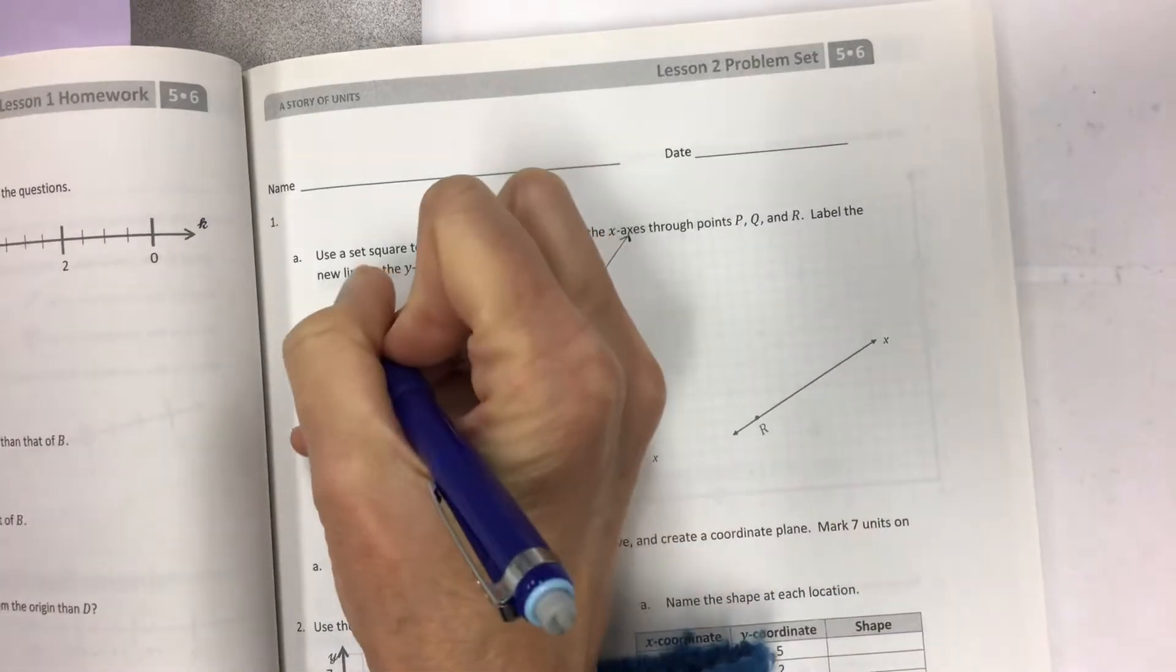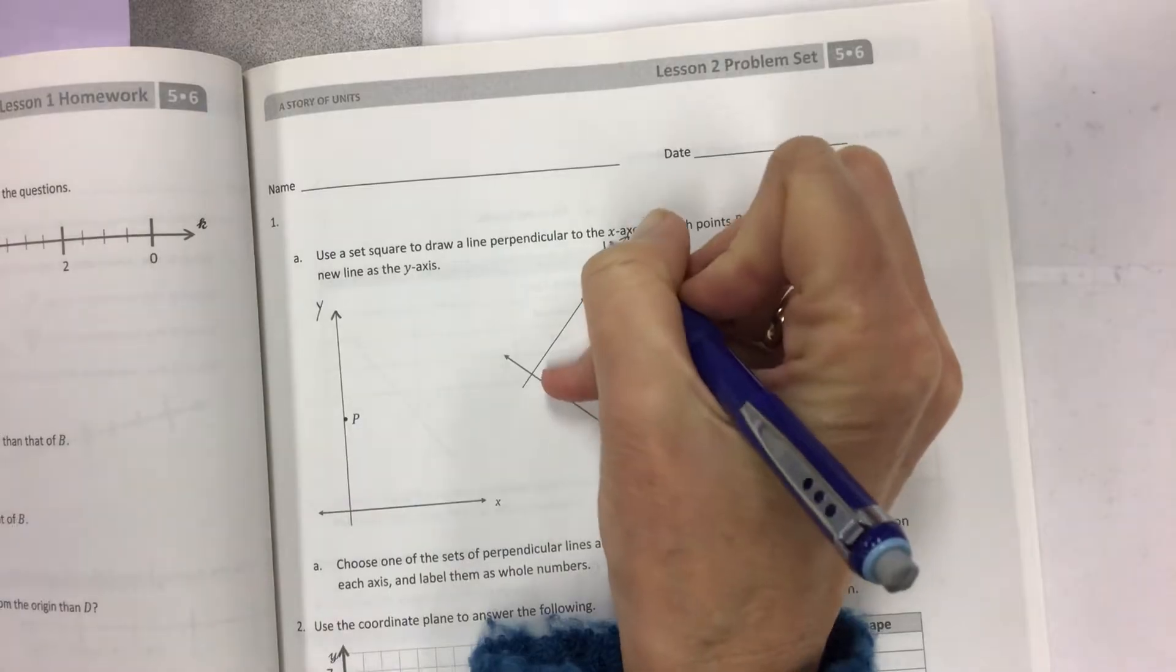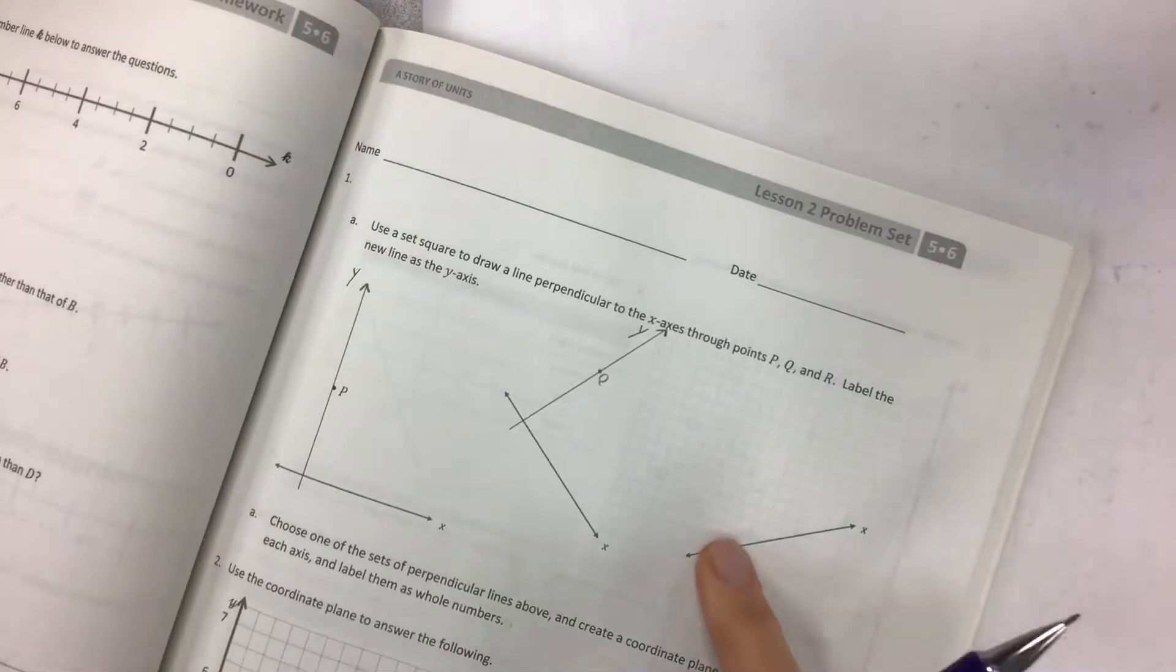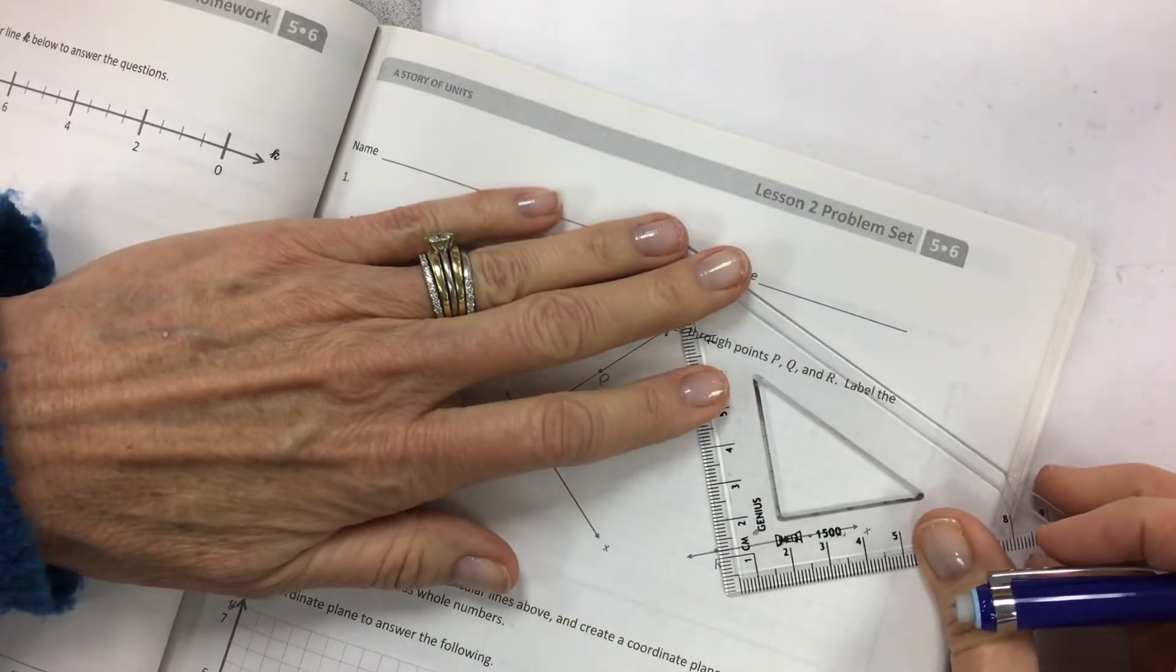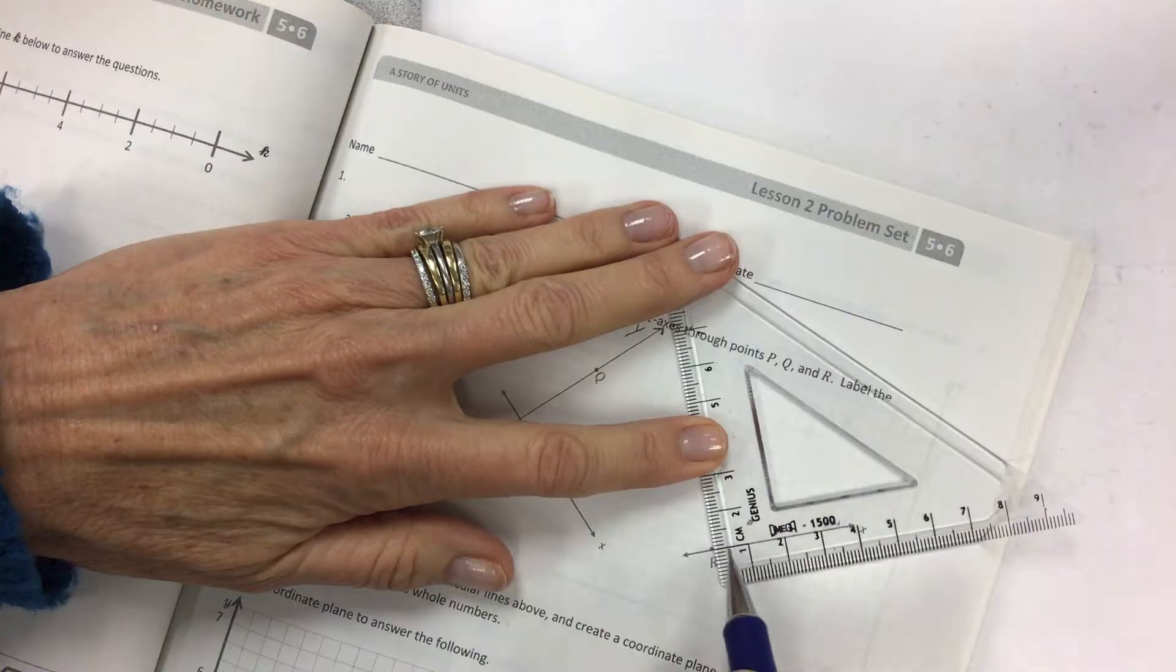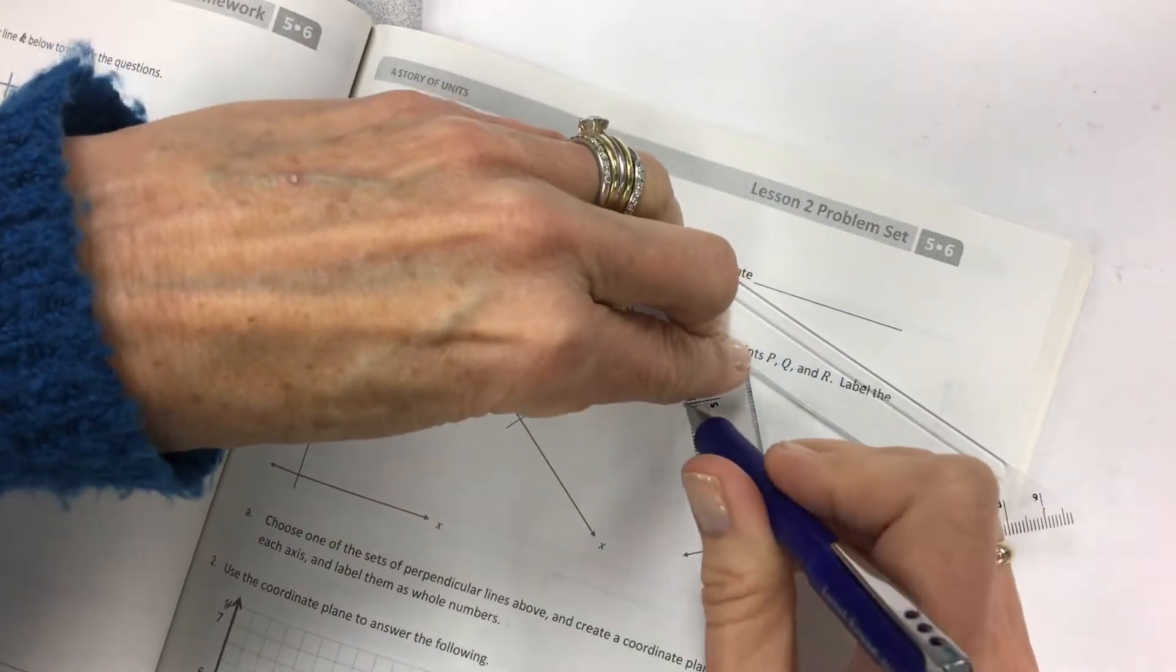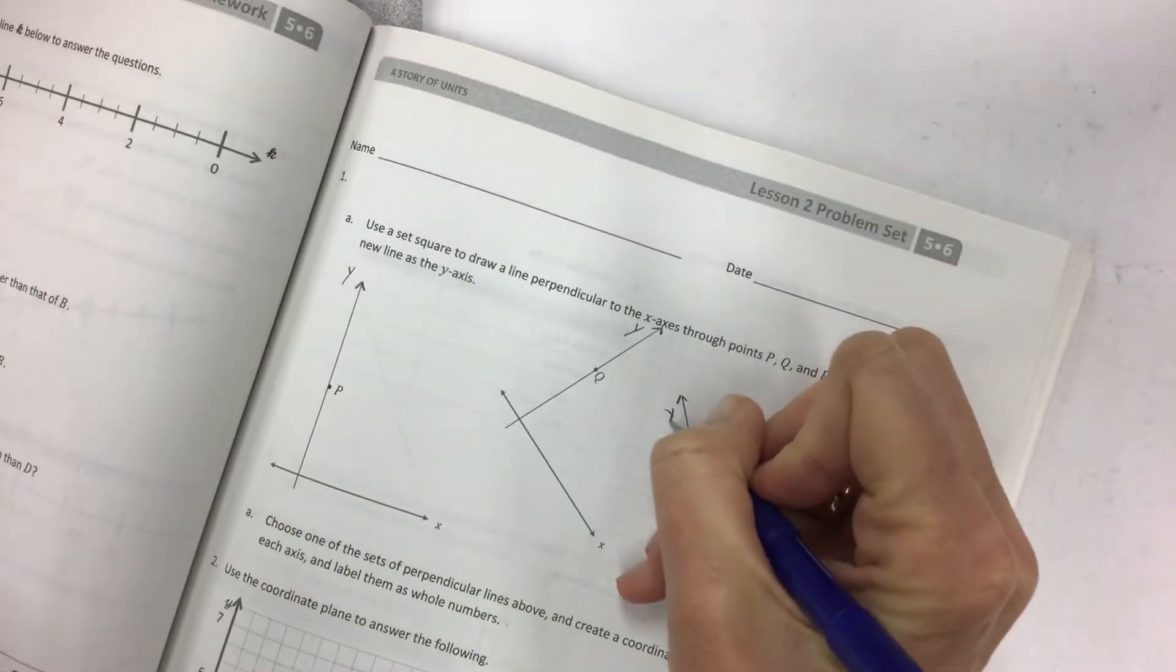You can do that, but we're not going to be doing that on a coordinate grid. We don't have to use it in the same way that we use geometry. So the next one we want to go through line Q. So take your set square and tip it so that this line here is right on the other line. Make sure you can see the point, hold it steady, and then send that right through point Q.